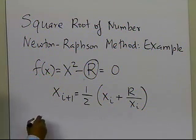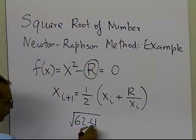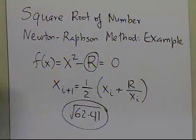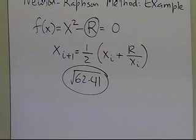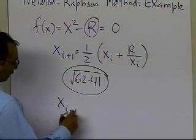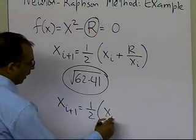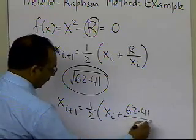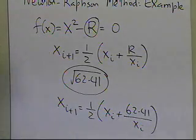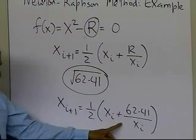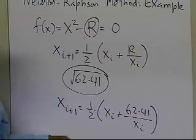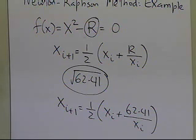Let's take an example. Suppose we are asked to find the square root of 62.41 using this recursive formula. We want to see how many iterations it takes to find the square root within a reasonable amount of accuracy. So x_{i+1} = ½ (x_i + 62.41 / x_i). This is a recursive formula: we put in a starting value of x_i, get a new value, put that back in, and keep doing this until the refinement is acceptable.